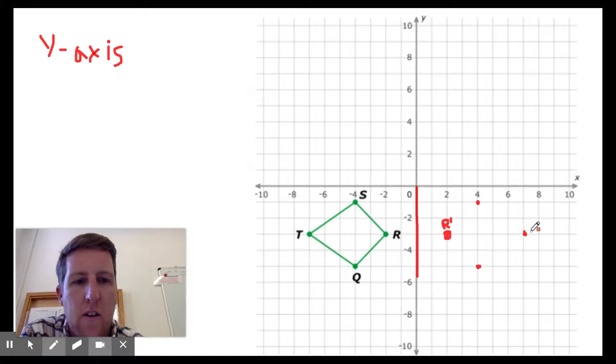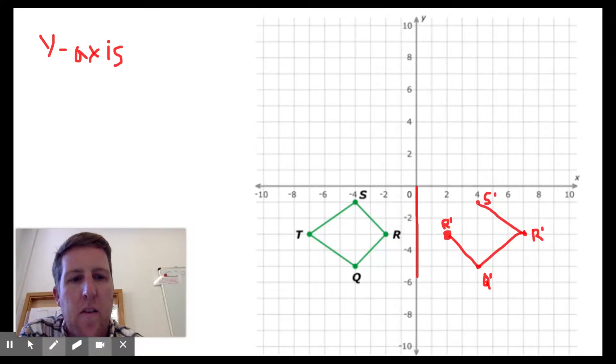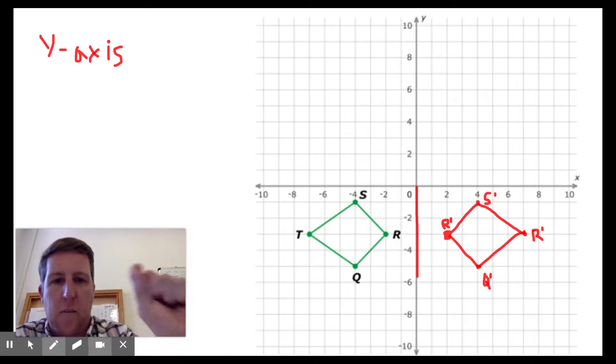So this is r primed, and this is s. Oh, it's really hard to draw an s with this computer thing. And this is q. And then we connect them all up. So on buzz math, you're going to have to draw these kind of shapes. It's a little bit easier on there because all of the points click back and forth.